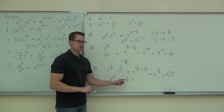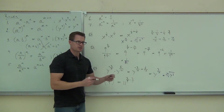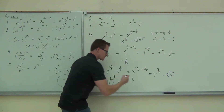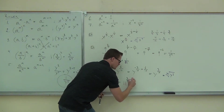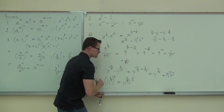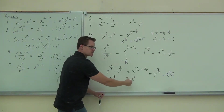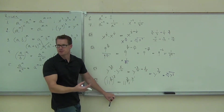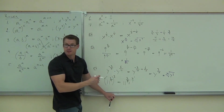You could get six ninths, but then you'd have to reduce that. If you simplify this, you know three goes into three one time, three goes into nine three times, and that's going to give you the two-thirds that you would reduce that six ninths into.